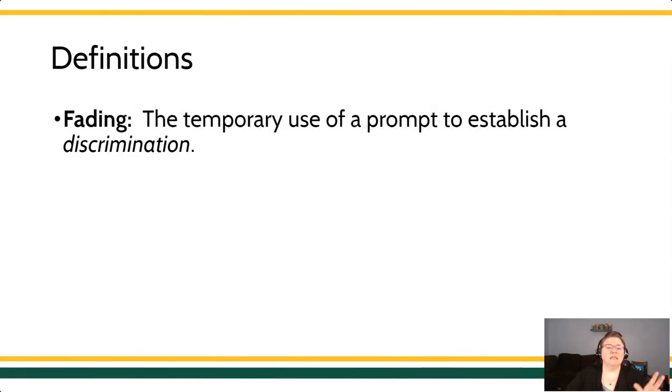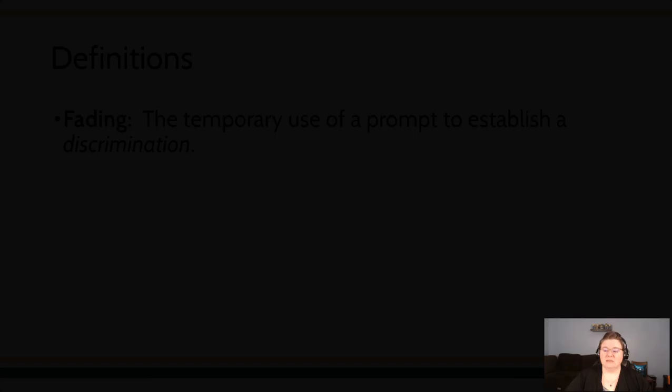When we talk about fading, this term is used in a couple of different ways. Miller talks about it in terms of the temporary use, and again, temporary because we don't want to foster prompt dependence, the temporary use of a prompt to establish a discrimination or a tightening of that stimulus control. It is worth noting also that in clinical practice, you'll sometimes hear folks say fading in terms of removing the prompt, which is good because you do eventually want to remove those prompts, but it's sometimes used to describe the removal of that temporary prompt. Fading can sometimes incorrectly be used by clinicians to refer to the leaning of a schedule of reinforcement. So be careful here with language. When Miller is talking about fading, he's referring to the temporary use of a prompt to establish discrimination or delineation between concepts or ideas or stimuli.